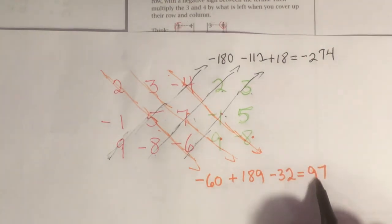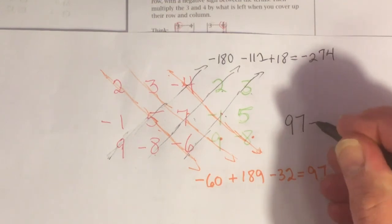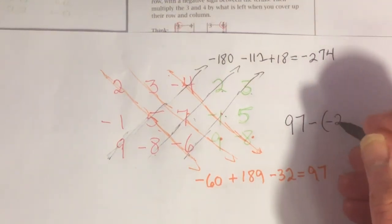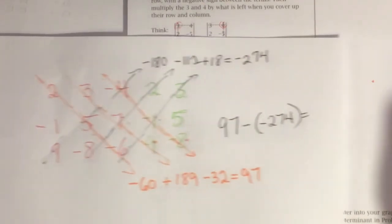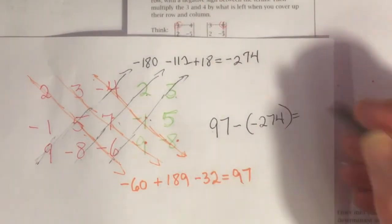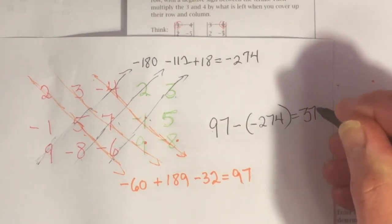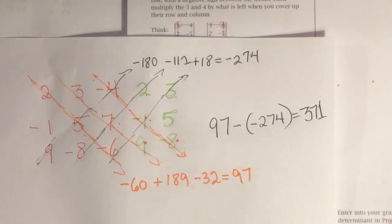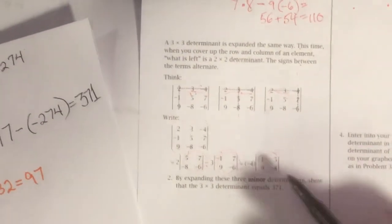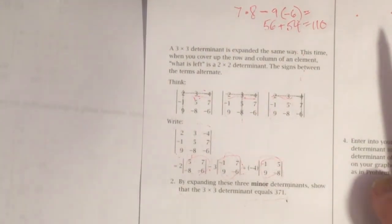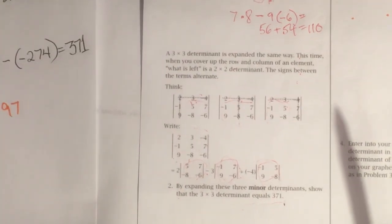Now, if I take this one, 97, and subtract this one, minus negative 274, it winds up being 371. And that's exactly what they said they wanted it to be. Look right down here, 371. And I actually double-checked with the calculator to make sure it was right. And sure enough, it was.